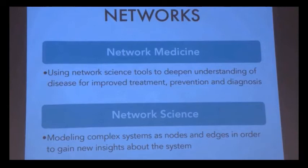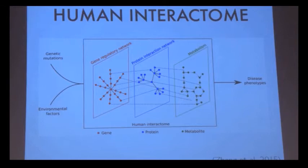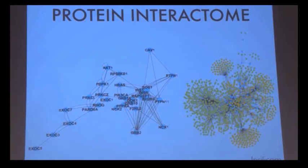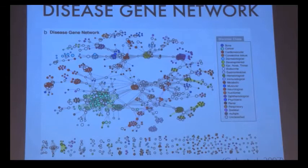More specifically, network medicine is an emerging field that uses the tools of network science to improve treatment, prevention, and diagnosis of diseases. The human interactome is a set of all molecular interactions in a cell at the level of genes, RNA, and proteins. However, the human interactome is not fully complete — it currently contains an incomplete protein interactome, showing all of the different protein-protein interactions in a cell.